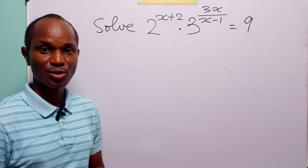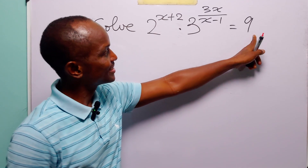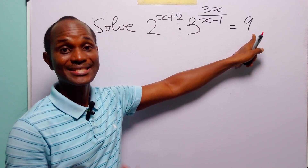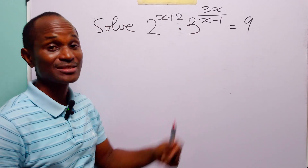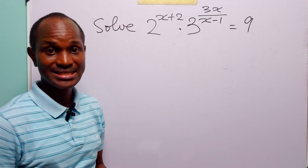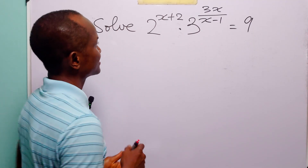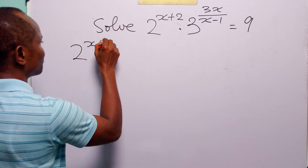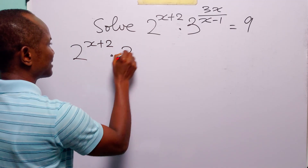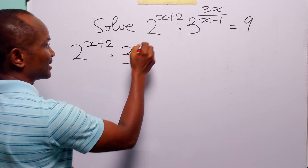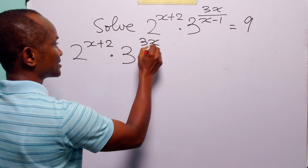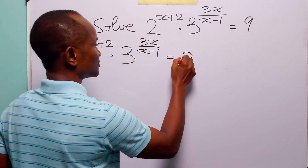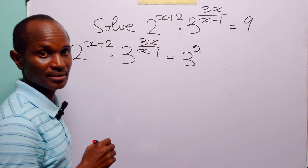Now to solve this problem, notice that on the right hand side of this equation we have 9, which is equal to 3 squared. So we are going to start by rewriting this equation as 2 to the power x plus 2, multiplied by 3 to the power 3x over x minus 1, is equal to 3 squared.